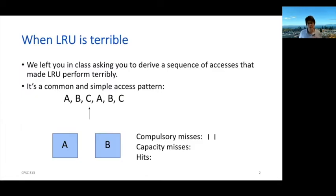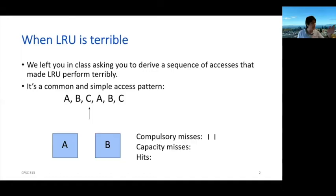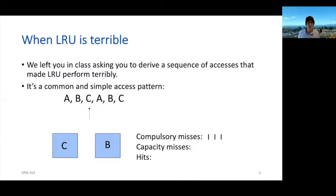So let's see what happens here. I've initialized our cache with A and B, and we're now on the third access, C, and we see that it's a miss. If we're using LRU, we look backward in time and say we need to evict A. So we evict A, put C in there, and that counts as our third compulsory miss.